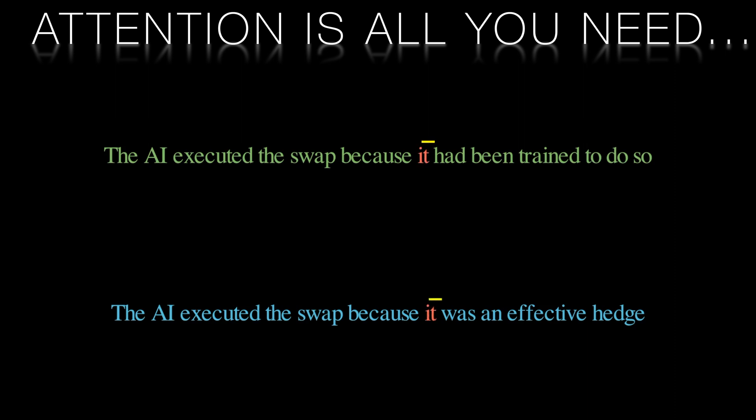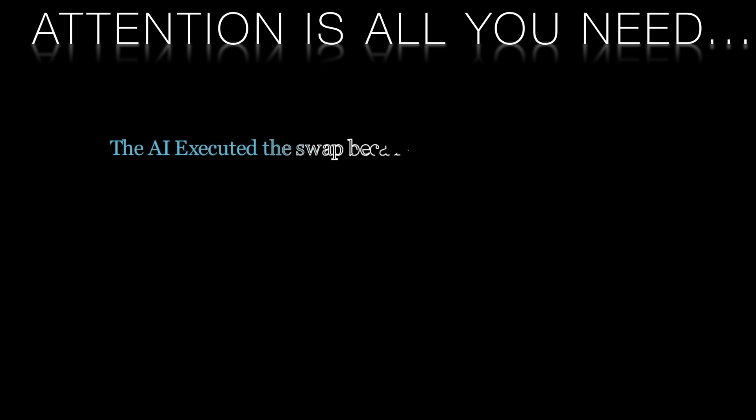In the first sentence, the AI executed the swap because it had been trained to do so, the attention head recognizes that the pronoun it refers to the AI as the training of the AI is the reason it executed the swap. This understanding allows the model to generate text that maintains the coherence of the sentence. In the second sentence, the AI executed the swap because it was an effective hedge. The attention head associates the pronoun it with the subject swap since the effectiveness of the hedge is the focus of the sentence. This correct association helps the model understand the overall meaning of language and generate appropriate responses or continuations.